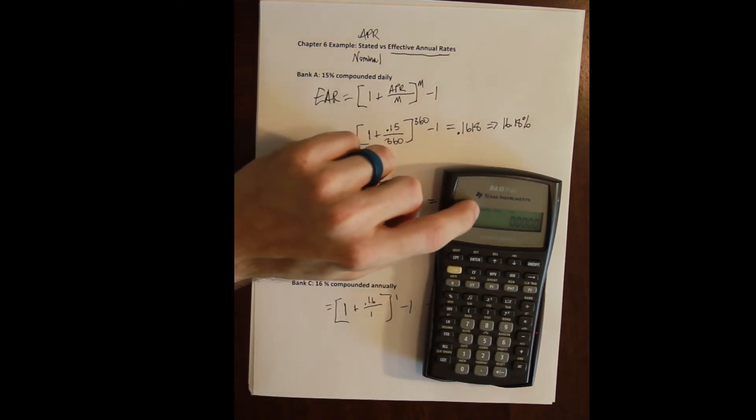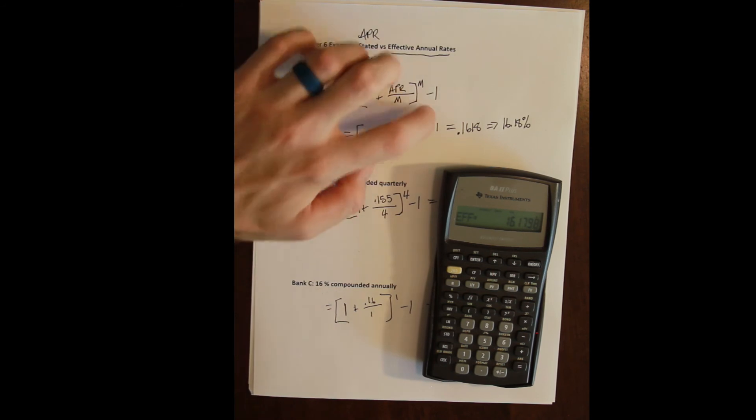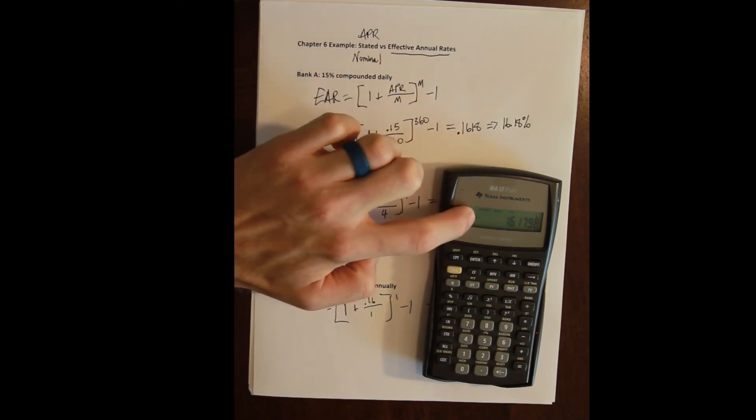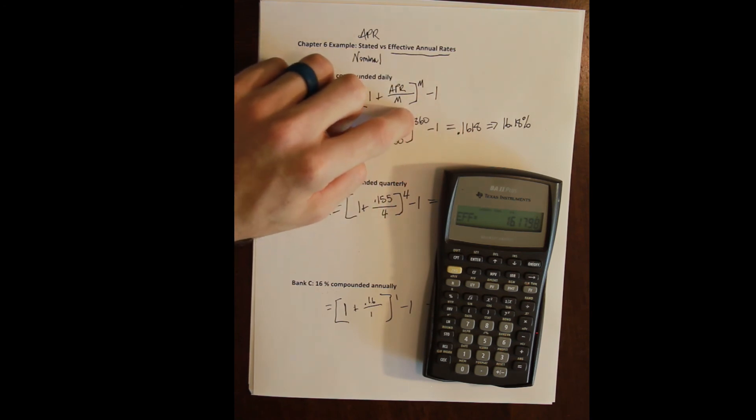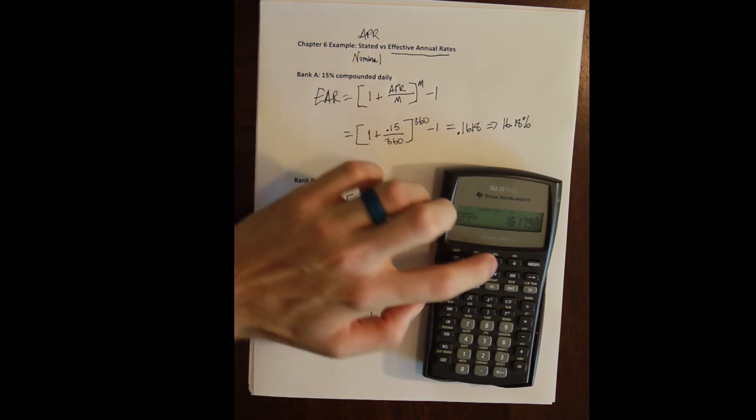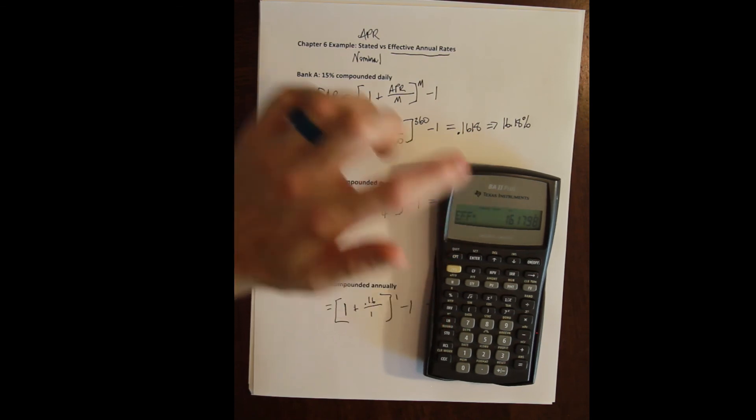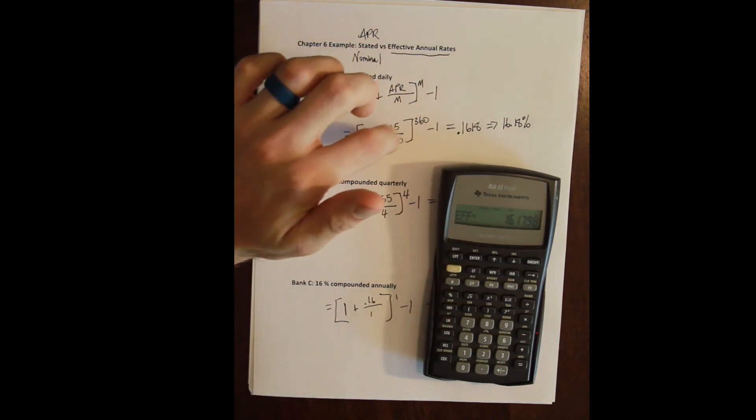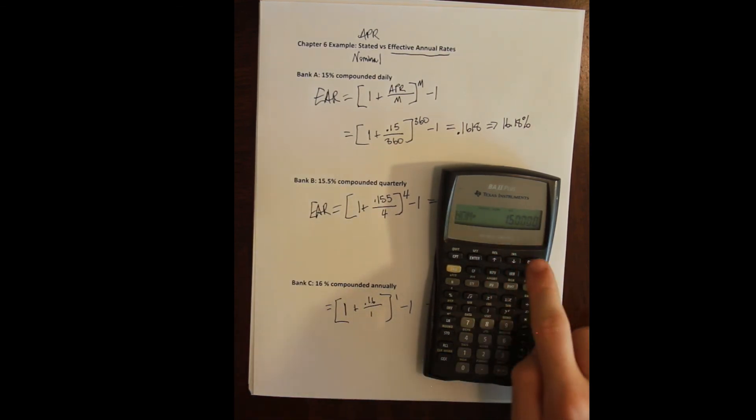The calculator tells me how to solve it—it says press compute. I press compute and I get 16.1798. Again, this is just a rounding difference when I did it by hand. This is how we use the calculator environment. We are just inputting the nominal rate.